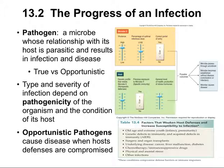Pathogenicity is the organism's potential to cause disease. We consider both true and opportunistic pathogens. True pathogens are going to be pathogenic to a healthy individual, whereas opportunistic pathogens are going to be pathogenic only to compromised individuals. So opportunistic pathogens are not considered pathogenic to healthy individuals.